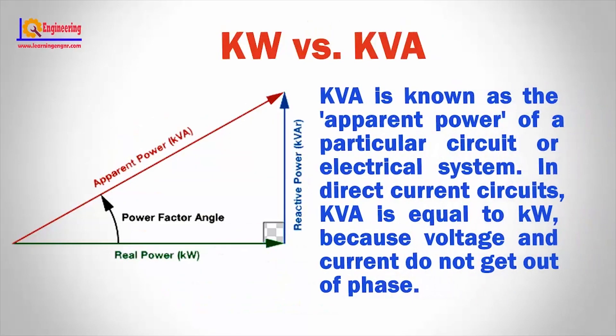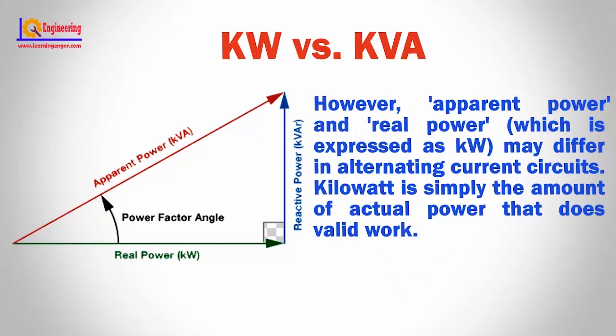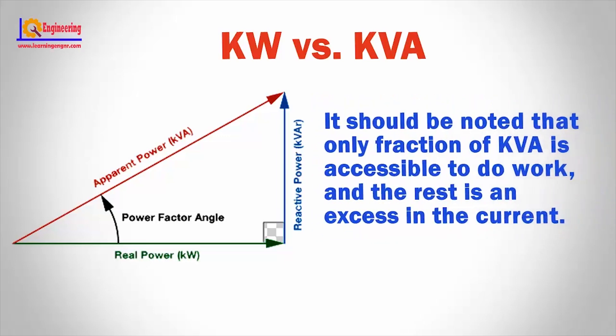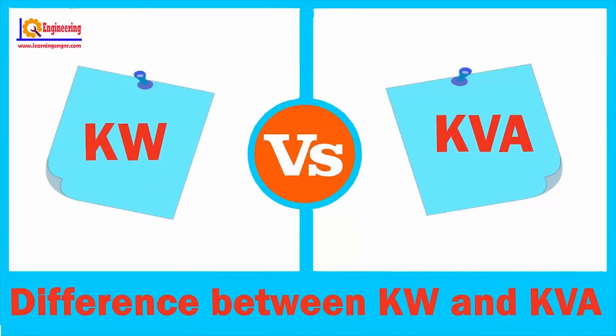KVA is known as the apparent power of a particular circuit or electrical system. In direct current circuits, KVA is equal to kilowatt because voltage and current do not get out of phase. However, apparent power and real power, which is expressed as kilowatt, may differ in alternating current circuits. Kilowatt is simply the amount of actual power that does valid work. It should be noted that only a fraction of KVA is accessible to do work, and the rest is excess in the current.